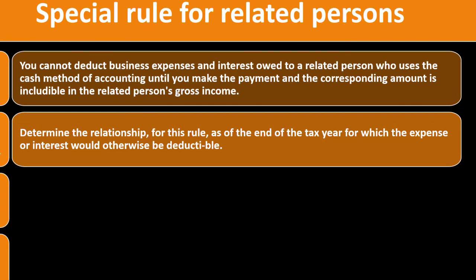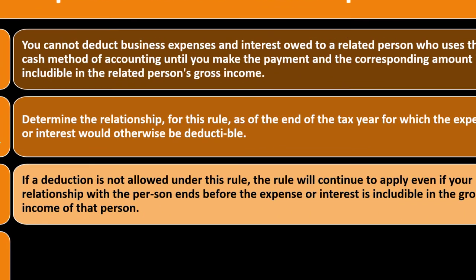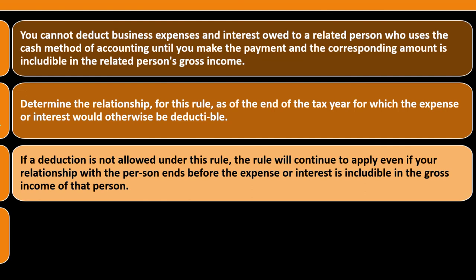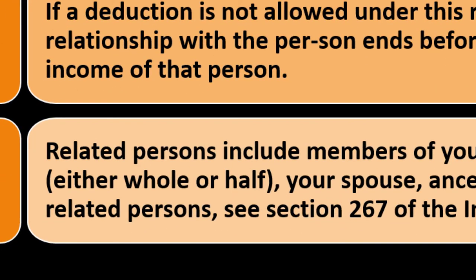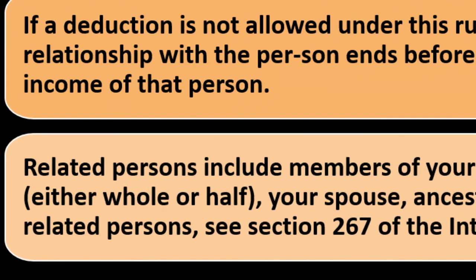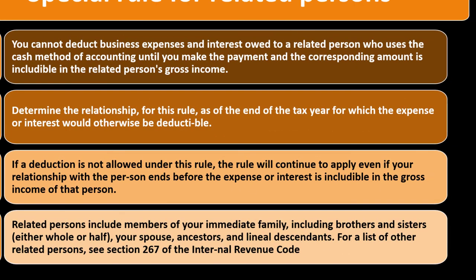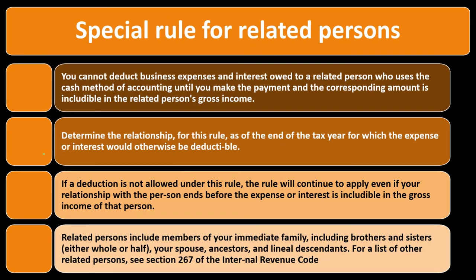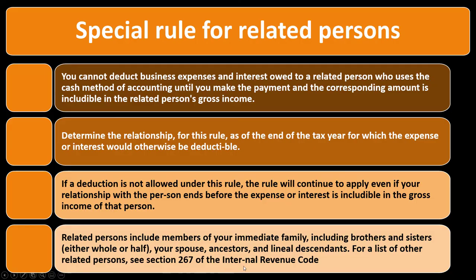Determine the relationship as of the end of the tax year for which the expense or interest would otherwise be deductible. If a deduction is not allowed under this rule, the rule continues to apply even if your relationship with the person ends before the expense or interest is included in their gross income. Related persons include members of your immediate family — brothers and sisters (whole or half), spouse, ancestors, and lineal descendants. For a list of other related persons, see Section 267 of the Internal Revenue Code.